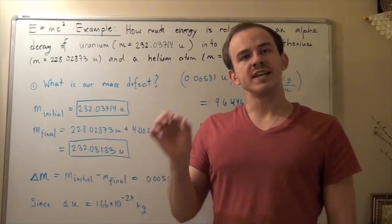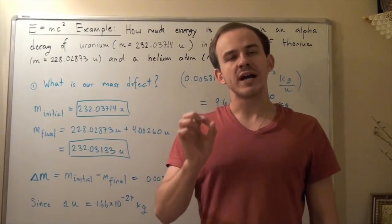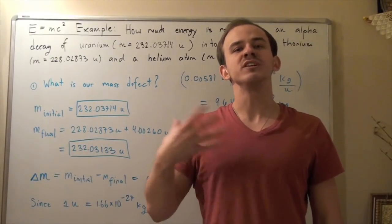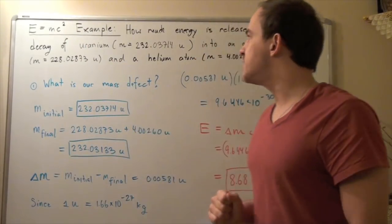In this example, we're going to look at a specific radioactive decay reaction, and we're going to try to find the amount of energy released in this reaction using the formula E equals MC squared. So let's begin.